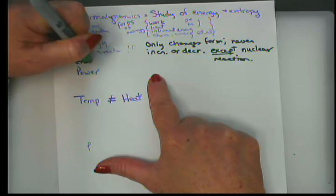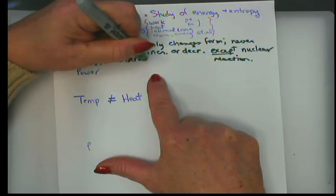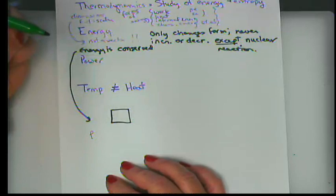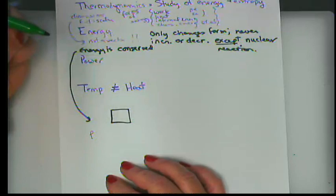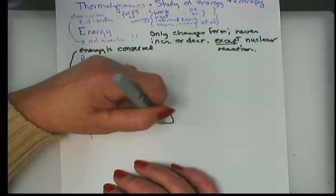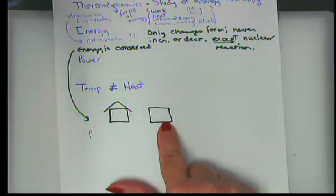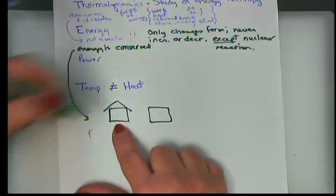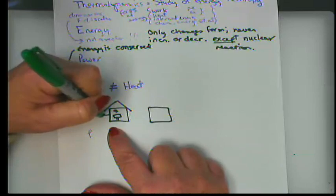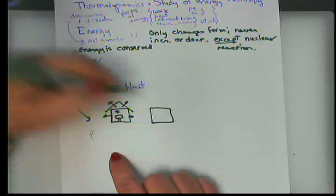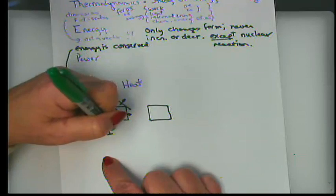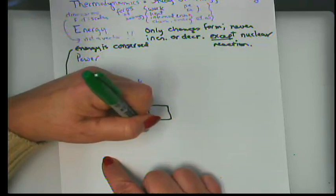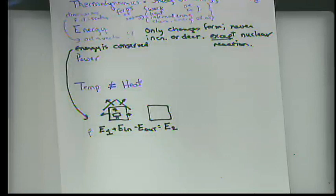Since energy is not a vector and is conserved, we can write an equation for any system: the energy in your house at time one, plus the energy you add, minus the energy you lose, equals the energy at time two. Heat is a form of energy — a specific form that moves based on a temperature gradient. We're talking about energy here, not temperature.